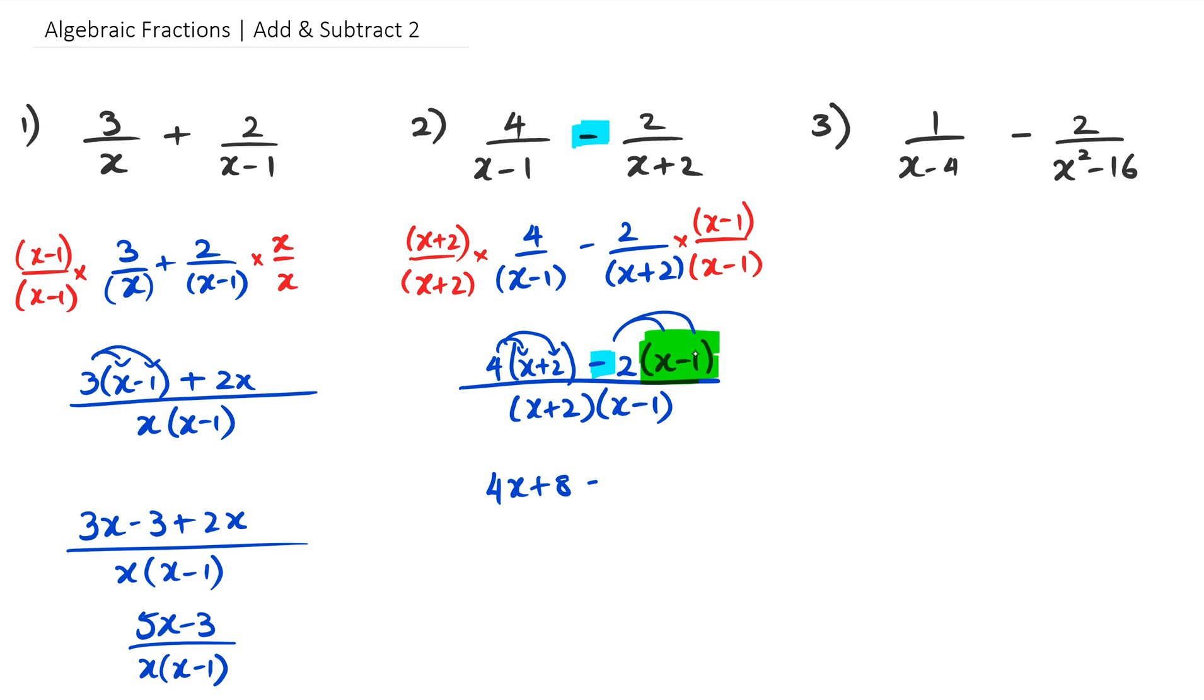So we expand the brackets, so we've got 4 times x and 4 times 2 which gives us 4x plus 8. And then we've got minus 2 times x and minus 2 times negative 1, so we've got minus 2x plus 2, and the whole thing is over x plus 2 times x minus 1. Now 4x minus 2x is 2x, and then we've got 8 plus 2 which is 10. And now all of that is over x plus 2 multiplied by x minus 1, and that's basically how you do question number 2.